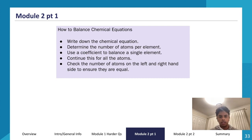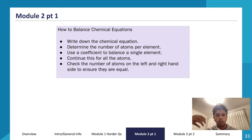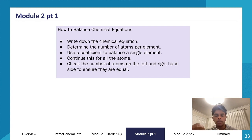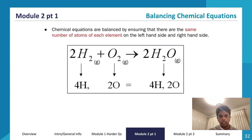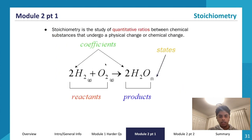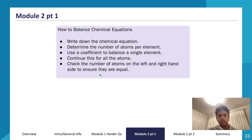The process for balancing chemical equations: write down or be given the chemical equation, determine the number of atoms per element, use a coefficient to balance a single element, continue this for all atoms, then check that the number of atoms on the left and right-hand sides are equal. Importantly, all coefficients must be integer values — not decimals or fractions.